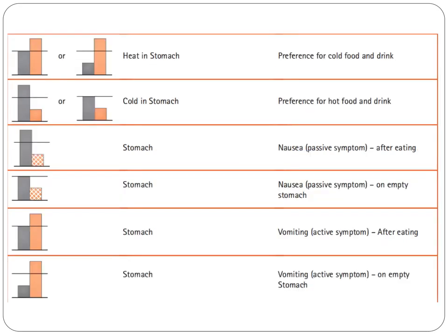Next tower diagram: there is heat in the stomach, which is excessive yang, causing a preference for cold food and drink. Next tower diagram: there is cold in the stomach — it is either excess yin, or normal yin with deficient yang — causing a preference for hot food and drinks.